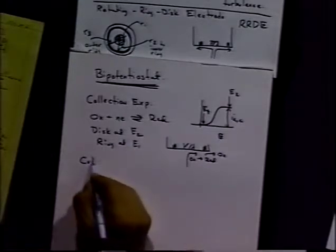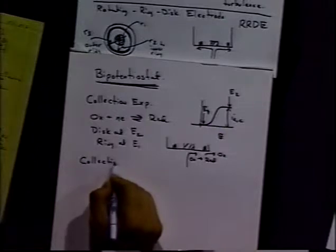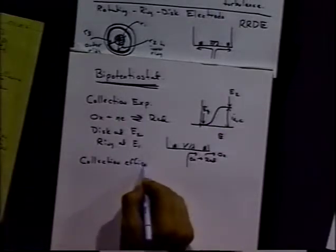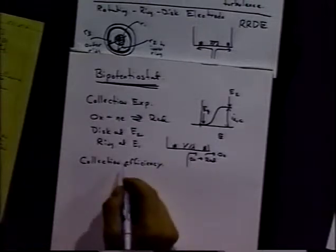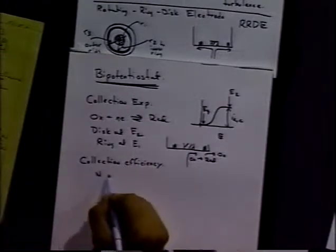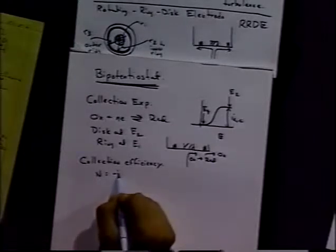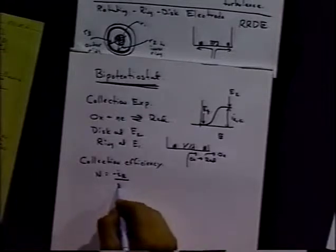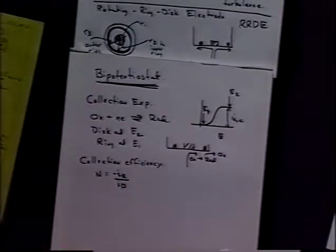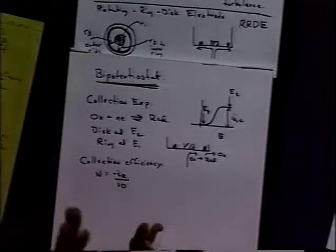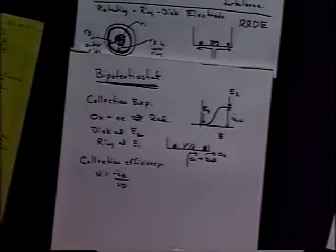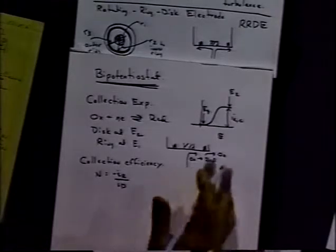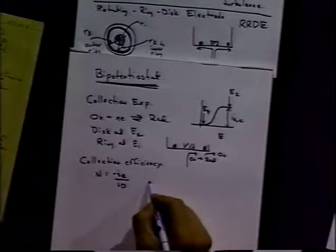What we get out of this is a parameter they call the collection efficiency. You can actually theoretically derive what that value should be, and you can also measure it experimentally, which is what's usually done. But given a particular geometry, and that would depend on the ring thickness, the ring disc separation, and so on, you can theoretically derive one. Typically we're in the range of 50 to 60 percent.